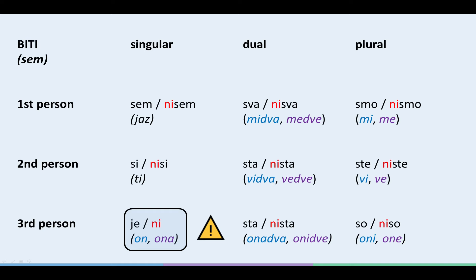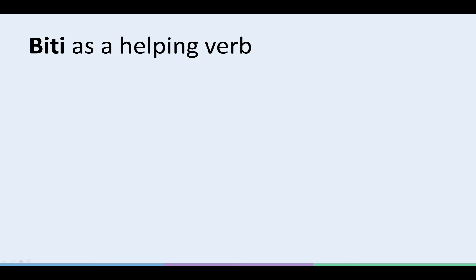So if NI means IS NOT and NE simply means NO, NOT, why do people tend to confuse them? I mean, the difference between ISN'T and NO is pretty big, right? Well, that's because besides meaning TO BE or TO EXIST, BITI can also be a HELPING verb.